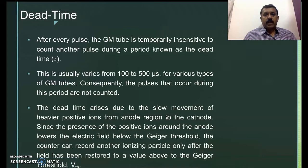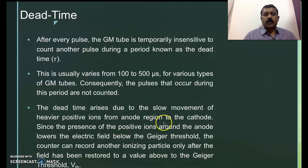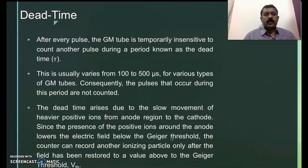Because of the heavy mass, they move slowly towards the cathode. The presence of these positive ions around the anode lowers the electric field, and sometimes it brings it down below the Geiger threshold.